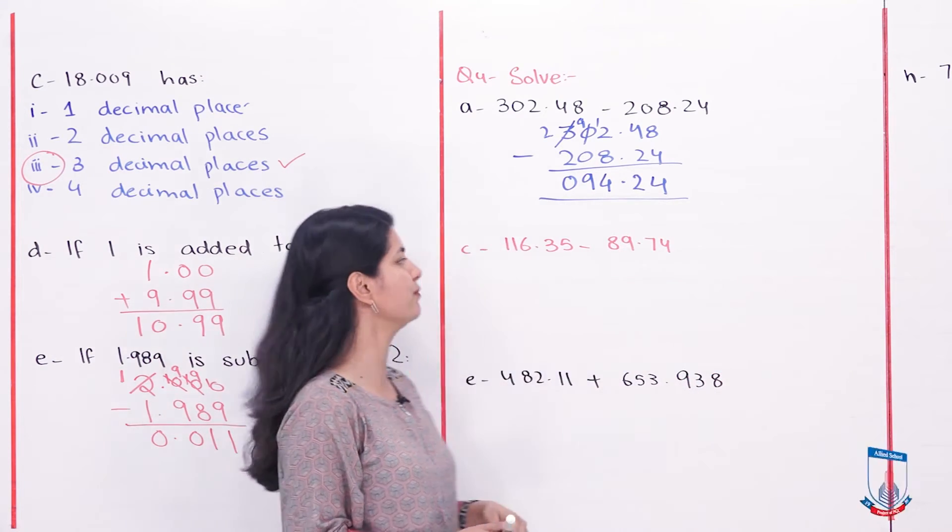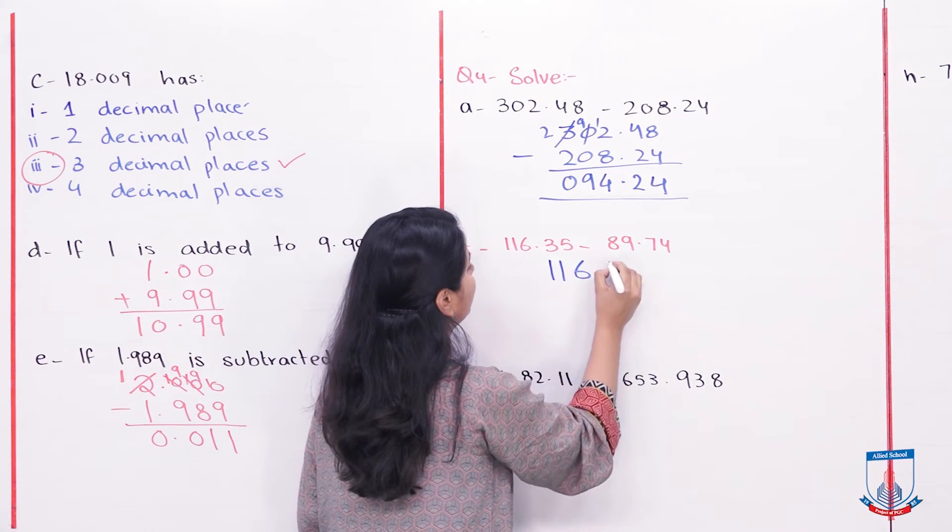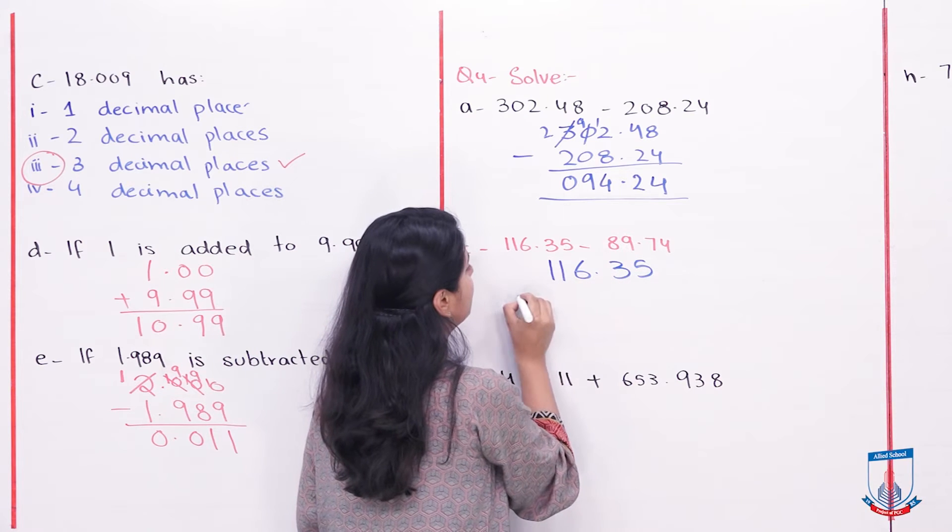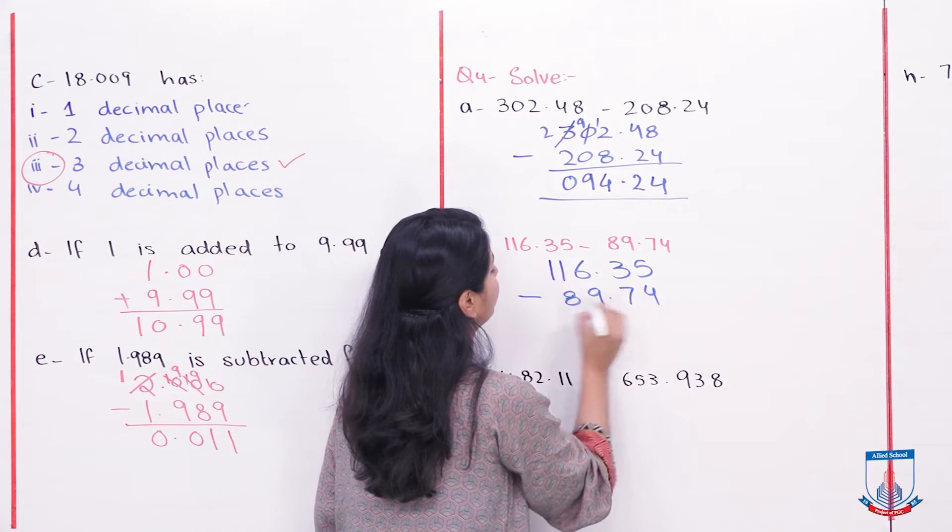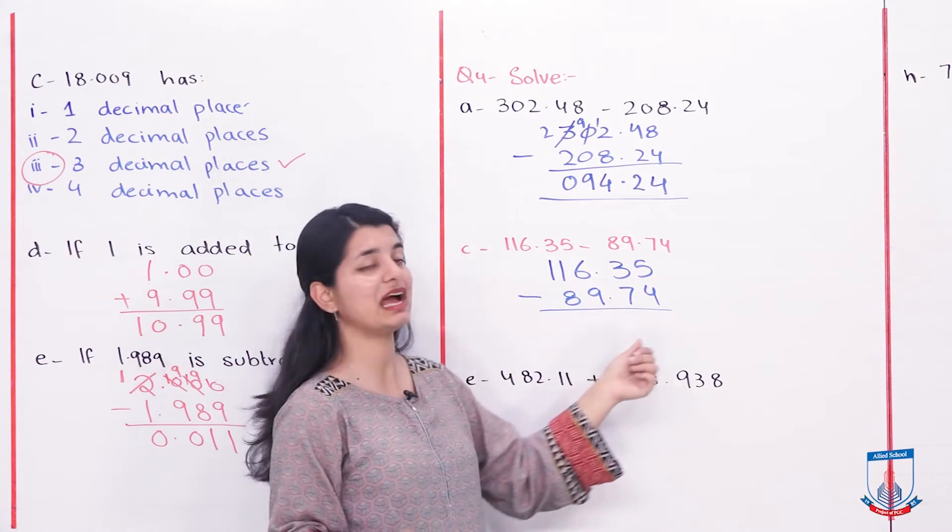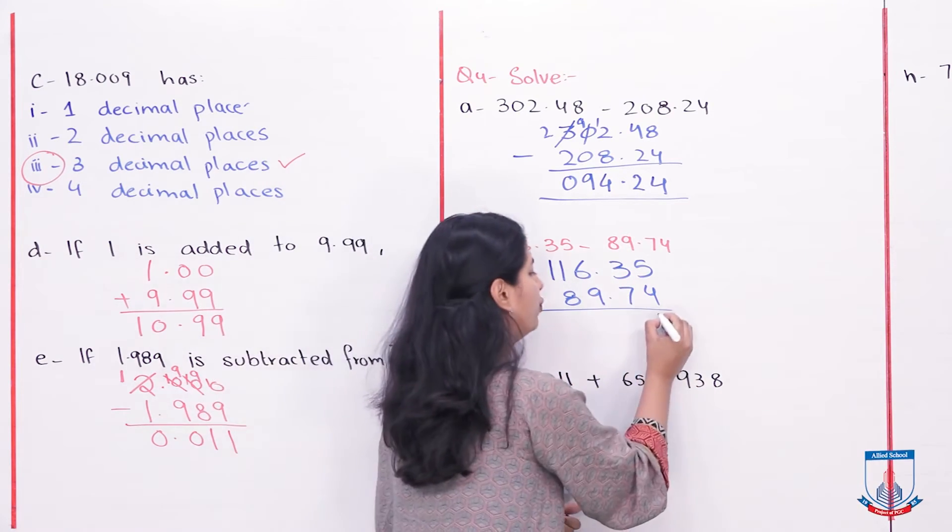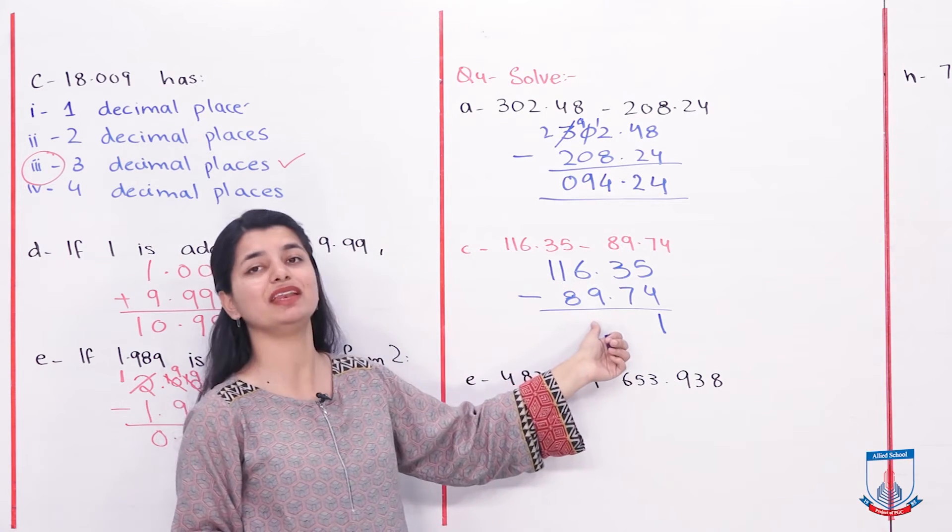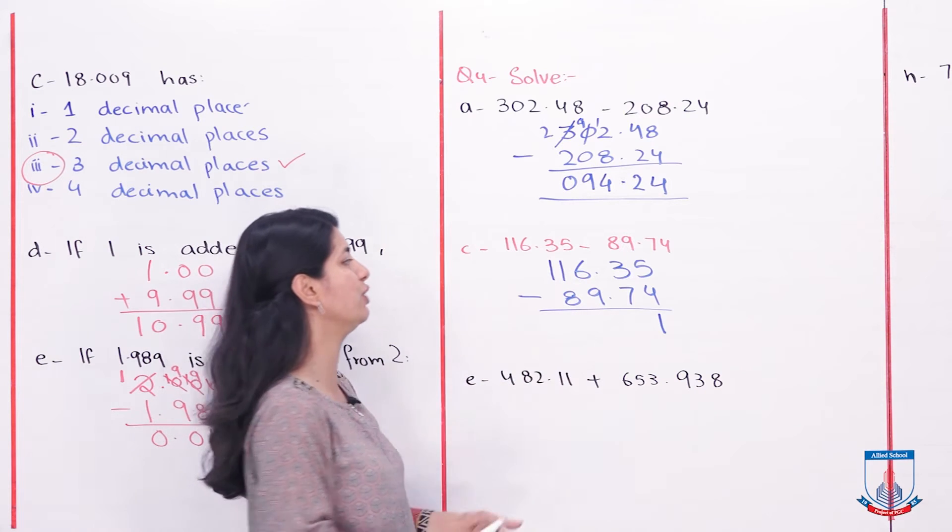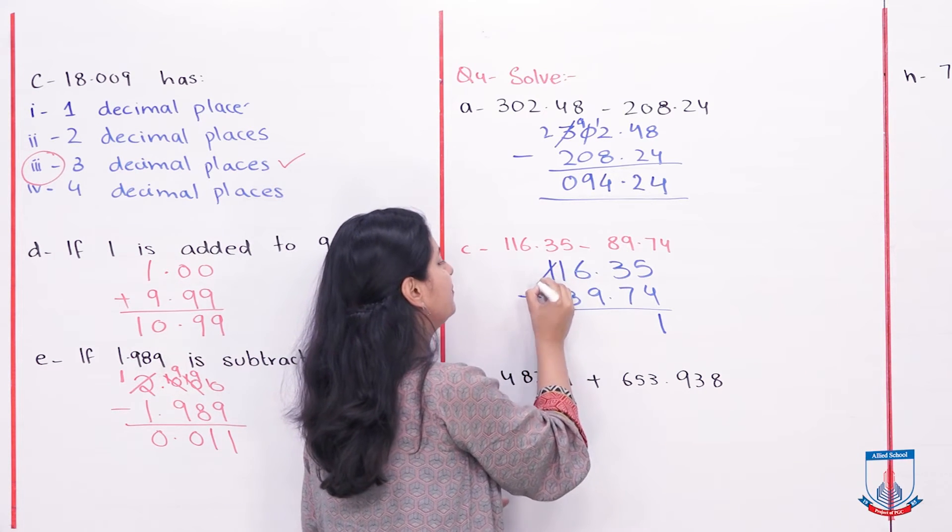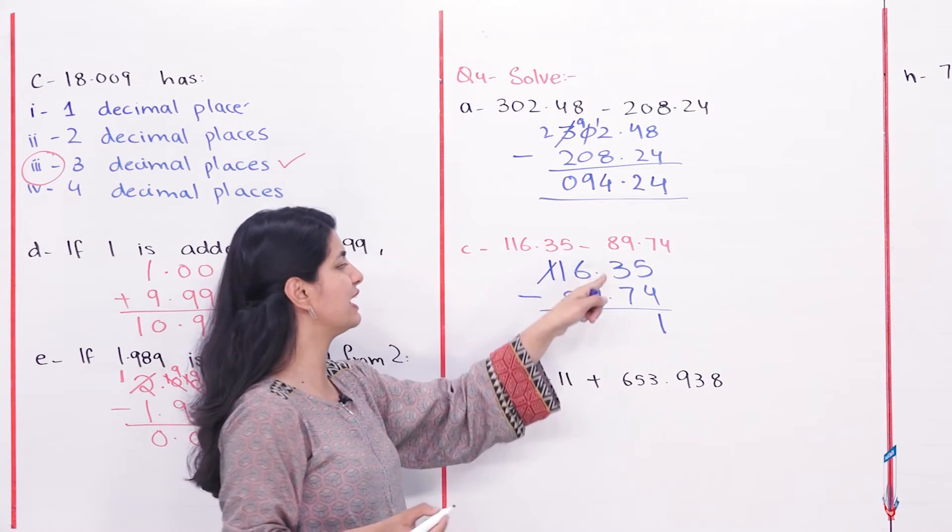C part is 116.35 minus 89.74. Now what do we do? We have like decimals. 5 minus 4 is 1. 3 minus 7 cannot be. 6 minus 9 cannot be. 1 minus 8 cannot be. Time to carry. Here we have 1 carry. 11. 11, 1 more carry. So this is 10 and this is 16.